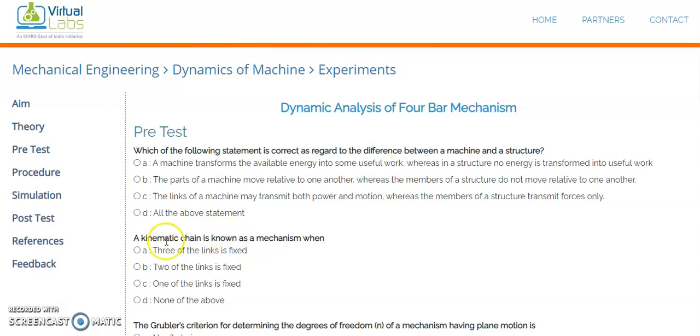For example, look at here: a kinematic chain is known as a mechanism when one of the links is fixed. If two links are fixed, it is again a mechanism but not a chain. If three links are fixed, it remains like a structure and we cannot move with that. So this is the answer for that particular question.